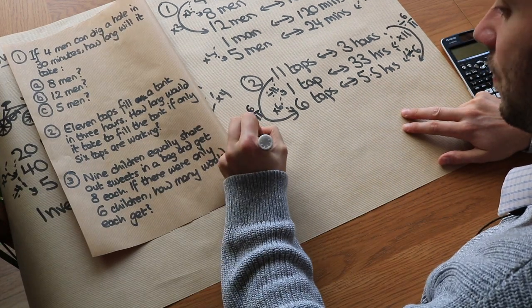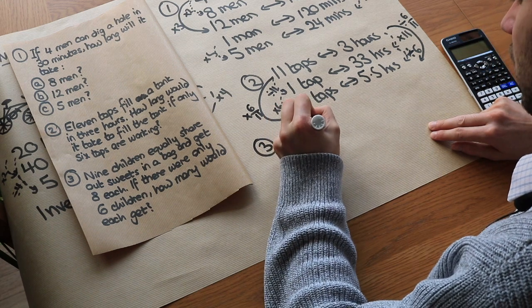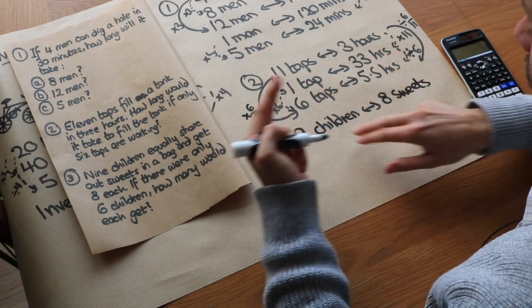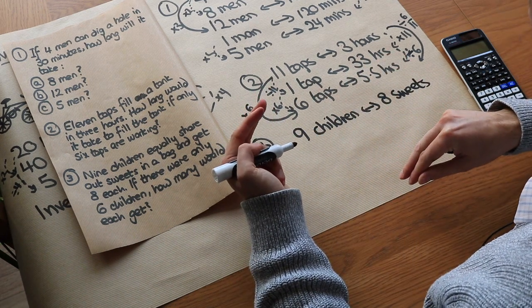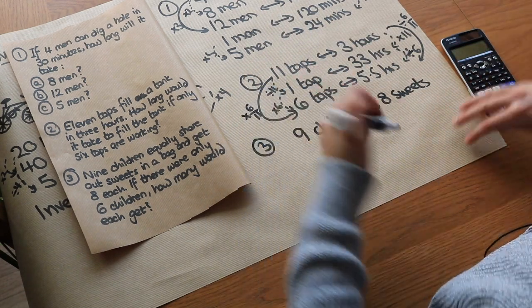What about the third one? 9 children equally share out sweets in a bag and get 8 each. So 9 children and they get 8 sweets per child. If you were to double the number of children, because they're sharing out the sweets more, you would halve the amount of sweets each. So they're inversely proportional.